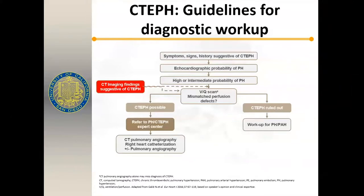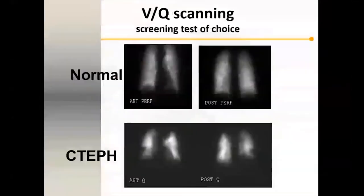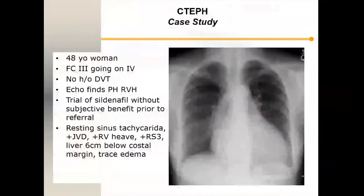Typically in our institution, the patient will undergo a right heart catheterization and a pulmonary angiogram or CT pulmonary angiogram to confirm the diagnosis. Here is a completely normal perfusion scan — this is not CTEPH. And here are the defects we see — this patient should be worked up for CTEPH.